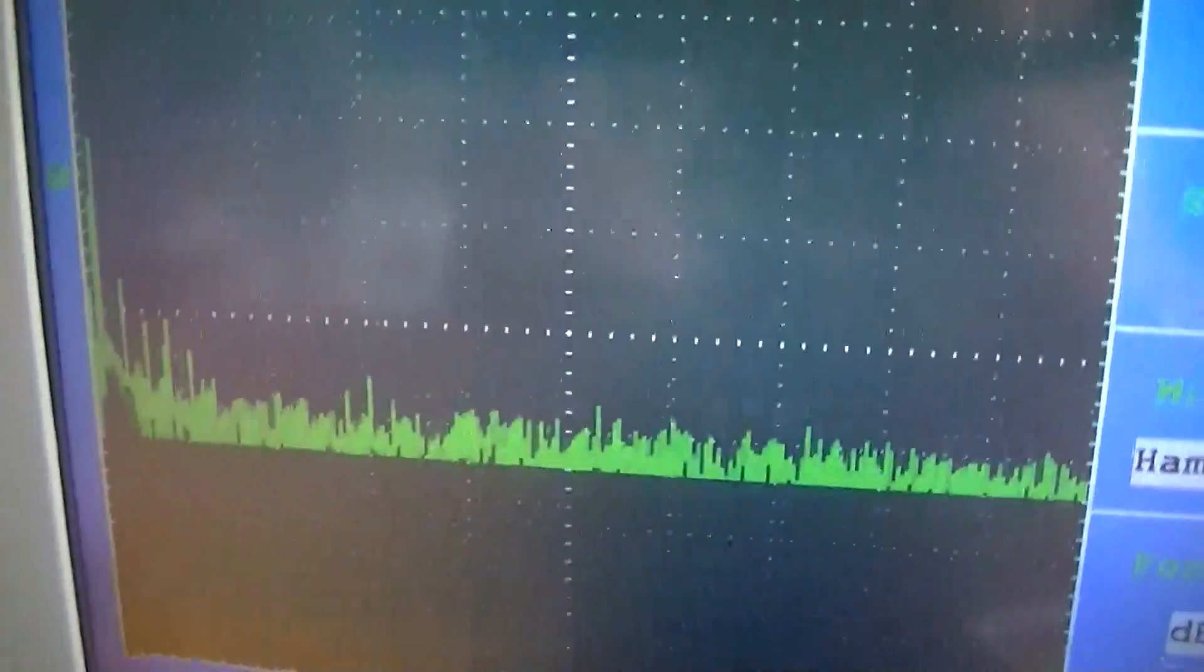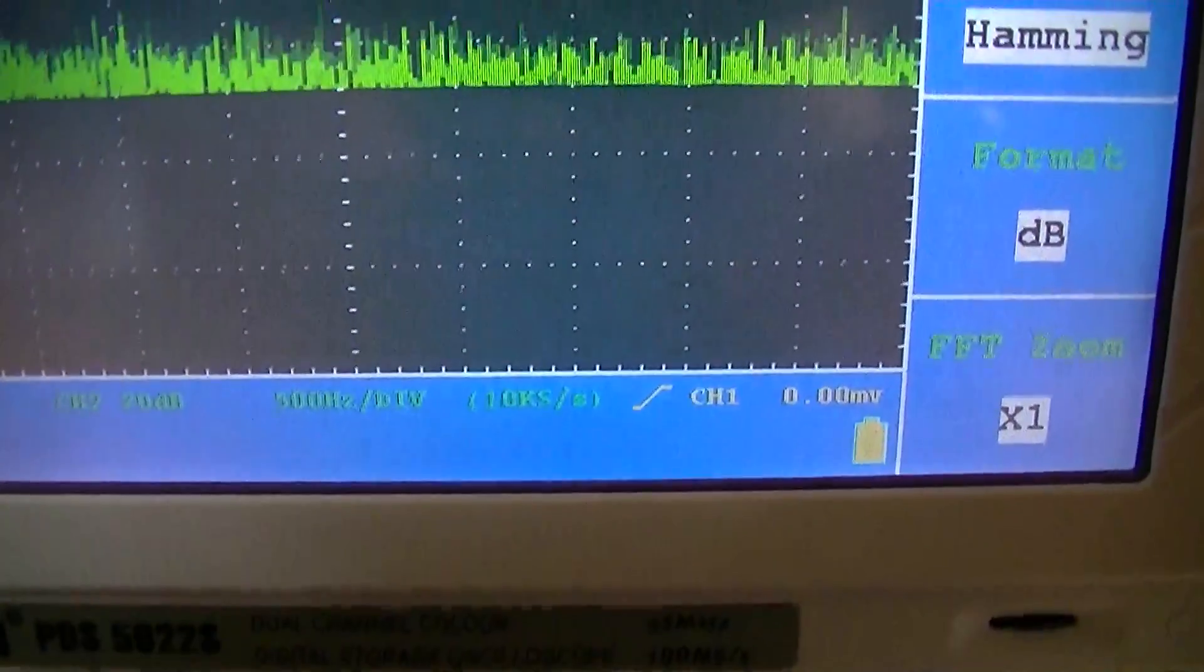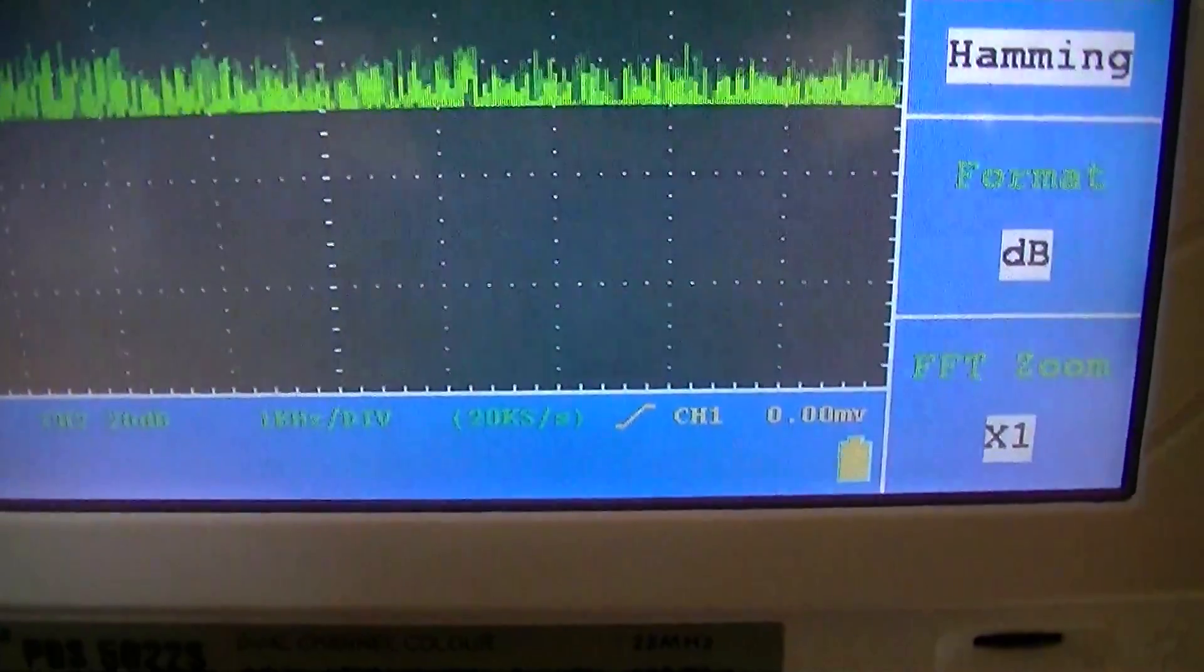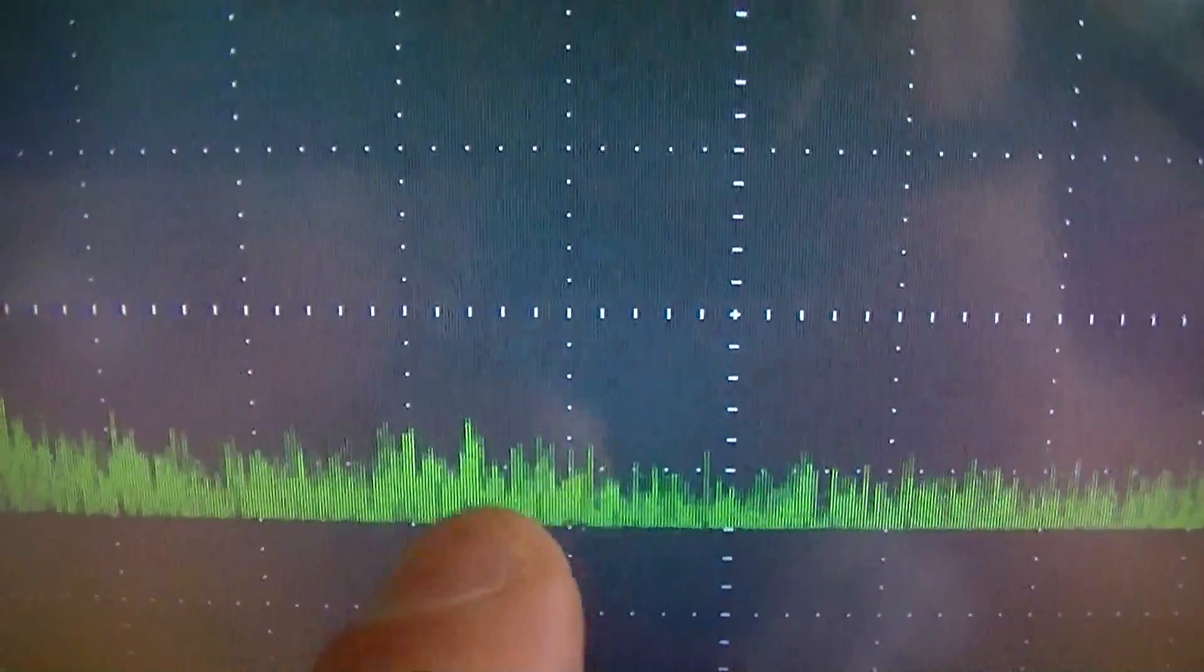We're going to go up the scale a little bit. Right now we're on 500 Hz per division. I'm going to take it up to 2.5 kHz, and you see there's a little spike right there.